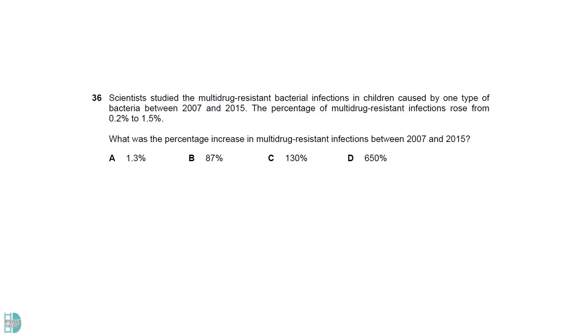The percentage increase is calculated by the final, minus the initial, divided by the initial, times 100. The answer is 650%.